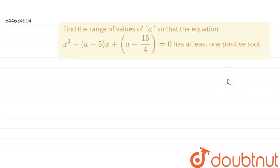Hello students. The question given here is: find the range of values of A so that the equation x squared minus (A minus 5) times x plus (A minus 15/4) equals 0 has at least one positive root.